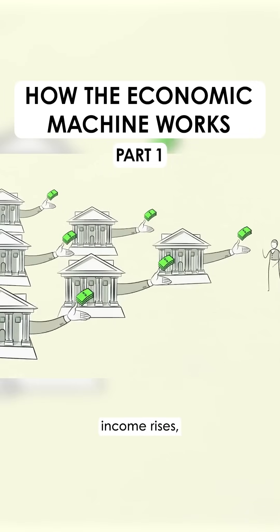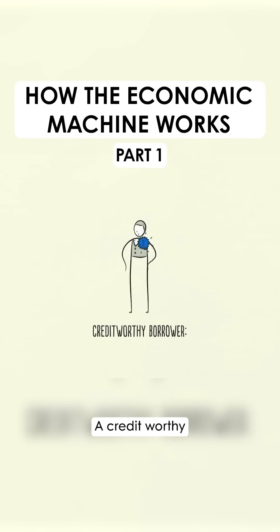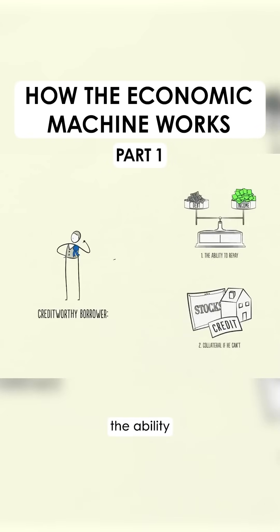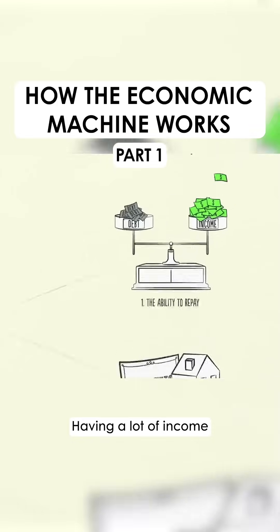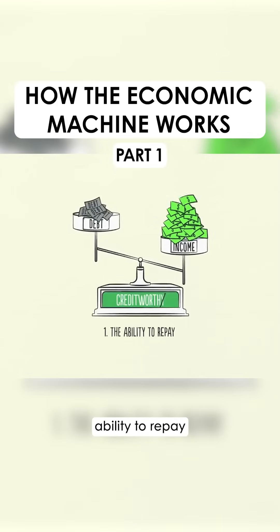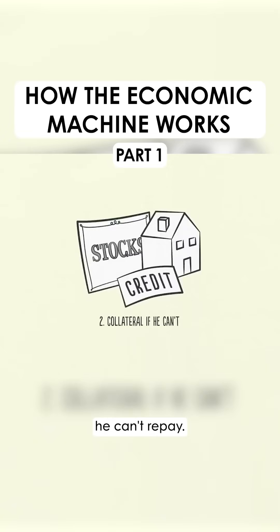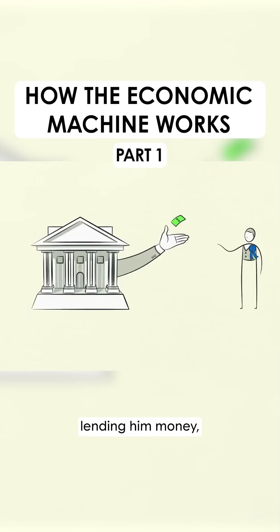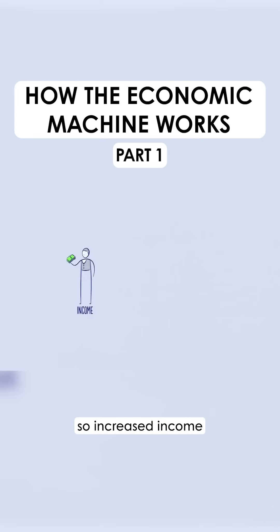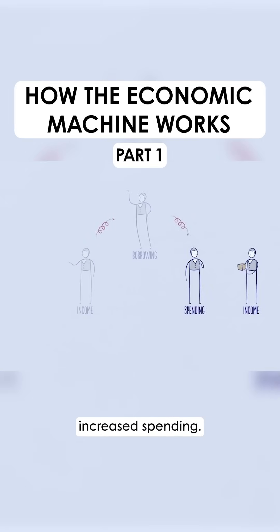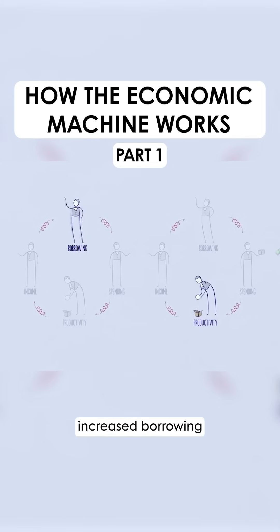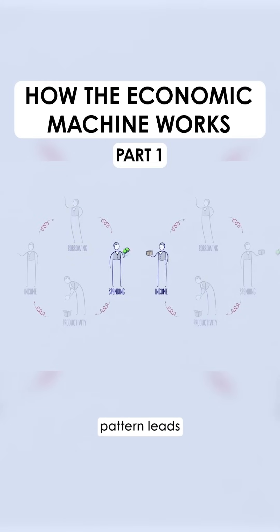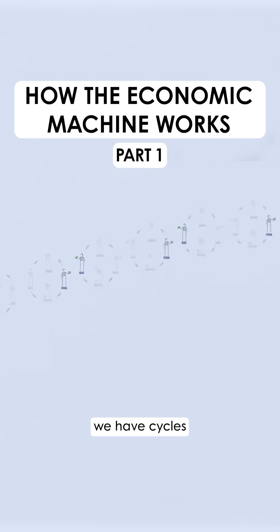When someone's income rises, it makes lenders more willing to lend him money because now he's more worthy of credit. A credit-worthy borrower has two things: the ability to repay and collateral. Having a lot of income in relation to his debt gives him the ability to repay. In the event that he can't repay, he has valuable assets to use as collateral that can be sold. This makes lenders feel comfortable lending him money. So increased income allows increased borrowing, which allows increased spending. And since one person's spending is another person's income, this leads to more increased borrowing and so on. This self-reinforcing pattern leads to economic growth and is why we have cycles.